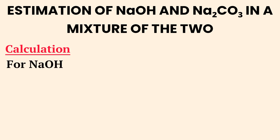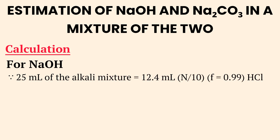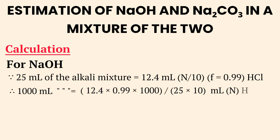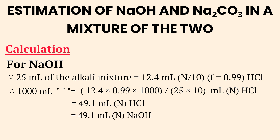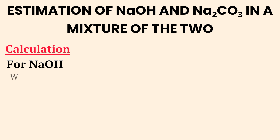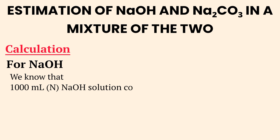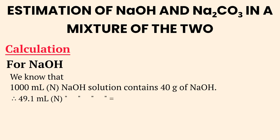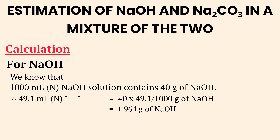For NaOH calculation: 25 mL of the alkali mixture requires 12.4 mL of N/10 HCl with factor F = 0.99. For 1000 mL, applying the formula: 12.4 × 0.99 × 1000 ÷ (25 × 10) = 49.1 mL of normal HCl. Therefore, the amount of NaOH present is equivalent to 49.1 mL of normal NaOH. Since 1000 mL of normal NaOH contains 40 g of NaOH, the amount in 49.1 mL = 40 × 49.1 ÷ 1000 = 1.964 grams of NaOH.